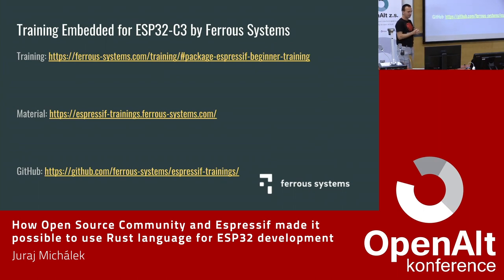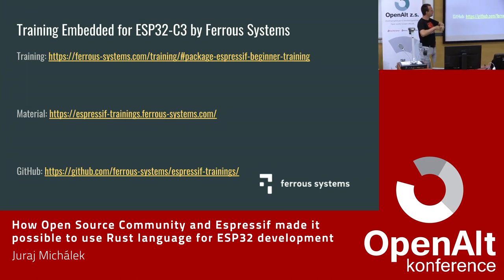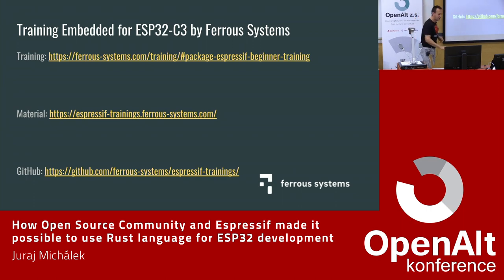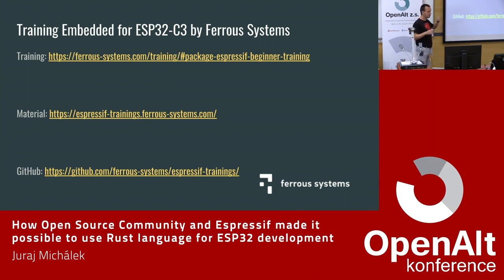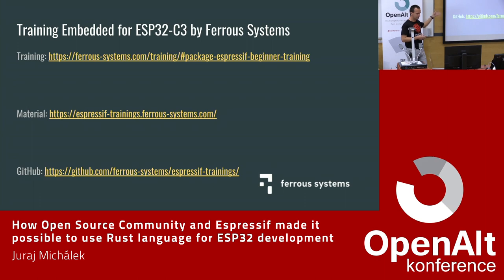We are also trying to make Rust accessible for people. Together with the Ferrous Systems guys, who are known in the Rust community for many Rust-related projects, we designed a training. There is a beginner training available at espressivetrainings.ferroussystems.com — the materials are open source, you can find them on GitHub. If you are new to embedded development, this training is really recommended.